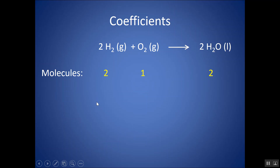Or, on a larger scale, we can scale up by a factor of 6.022 times 10 to the 23rd, because that's what a mole is. And these coefficients can represent mole ratios. For every two moles of H2, one mole of O2 would react to create two moles of H2O.